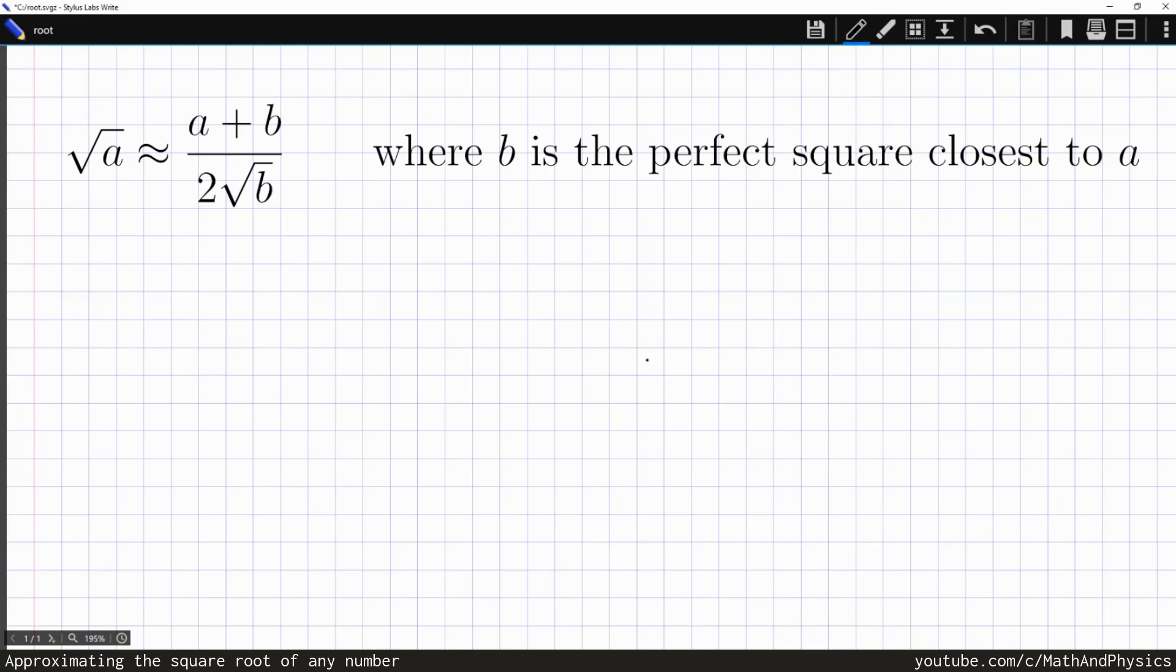So let's say we want to compute the square root of 68. So a is going to be 68. Now the perfect square closest to that is 64, which is 8 squared. So by perfect square, I just mean a square of an integer number. So we approximate the root of 68 by a plus b, which is 132, divided by 2 times the square root of 64, which is 2 times 8, is 16, so we have 132 over 16.